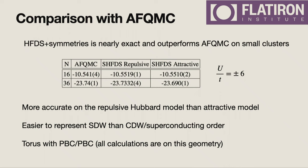On 16 sites the results are nearly exact, and on 36 sites they're pretty similar to AFQMC. A 36-site Hubbard model has a Hilbert space way bigger than anything you could do with exact diagonalization, and we're demonstrating nearly exact results here. We also find that it's actually easier to represent the spin density wave Mott insulator than it is to represent the charge density wave.